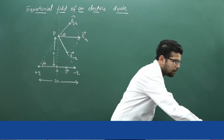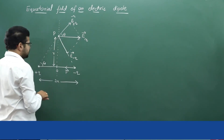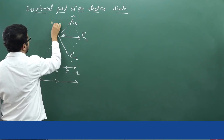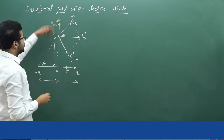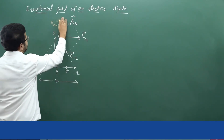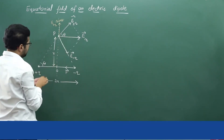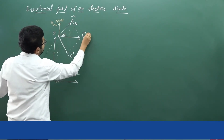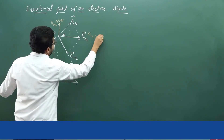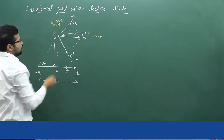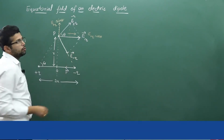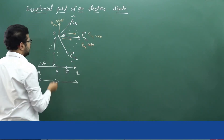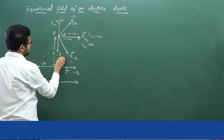E of plus q can be resolved into two components. The vertical component is E of plus q sin theta (upwards), and the horizontal component is E of plus q cos theta. Similarly, E of minus q can also be resolved into two components: the horizontal component is E of minus q cos theta in this direction, and the vertical component is E of minus q sin theta downwards.